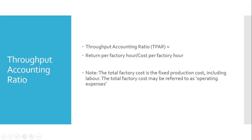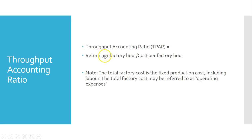We'll talk about why it's a useful formula. The return per factory hour is really something we've worked out already — per product. So per product X, we found what the return per factory hour was. That's finding out what the throughput is per factory hour. For product X it was 8.5 and for product Y it was 8.